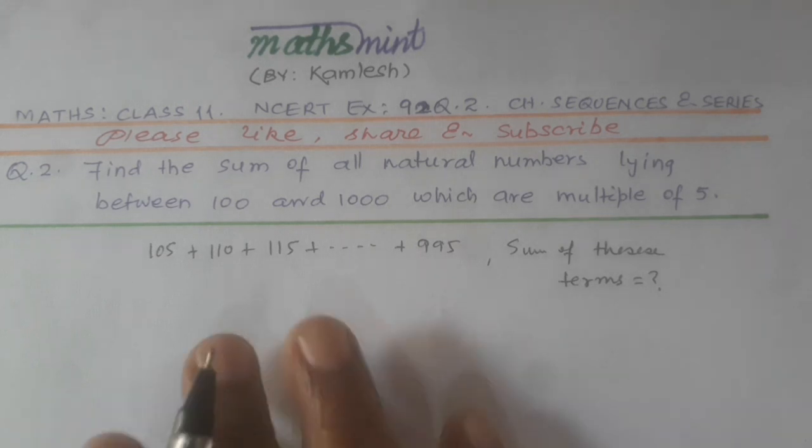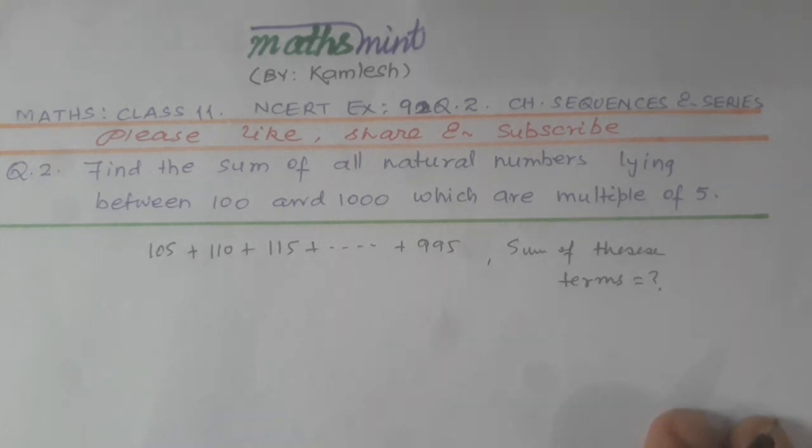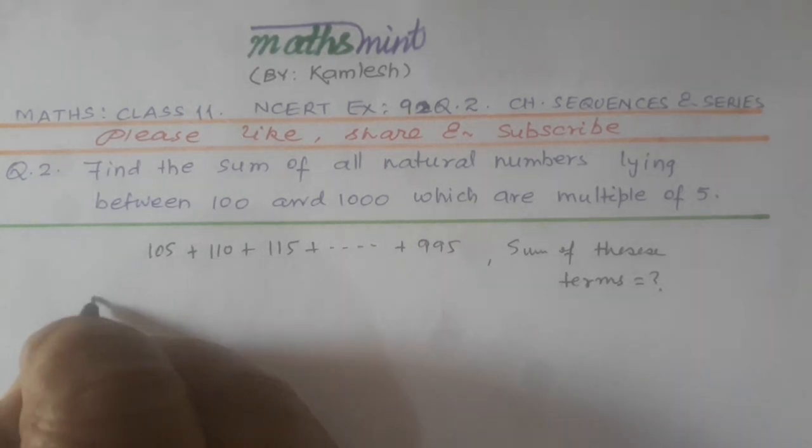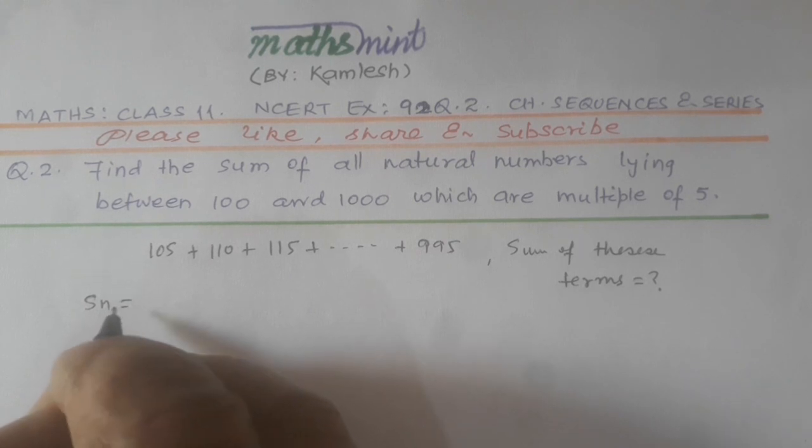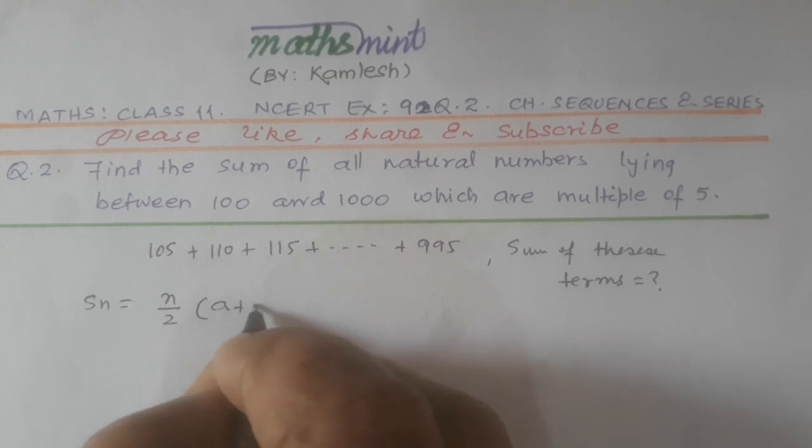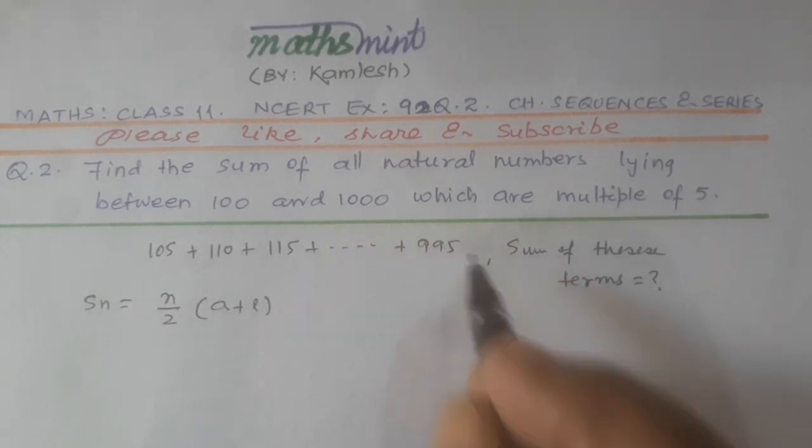First of all, we know this formula for sum of terms: Sn equals n by 2 times (A plus L), where L means last term, which is 995.